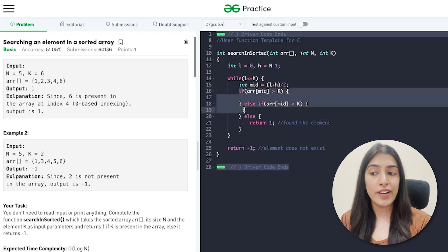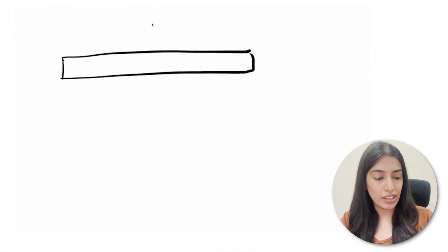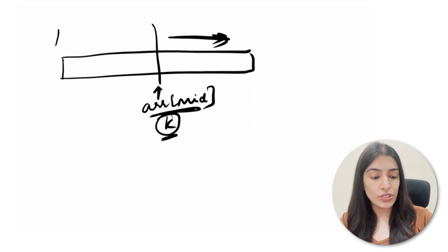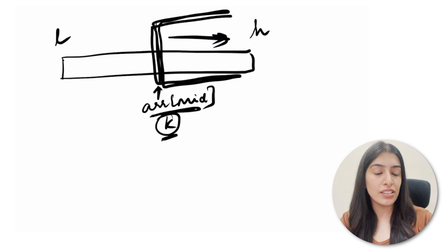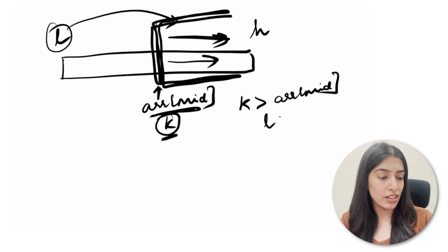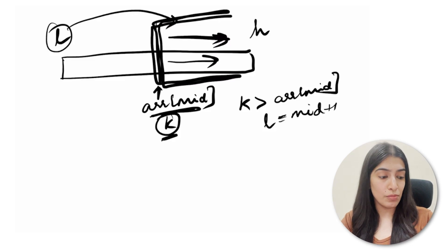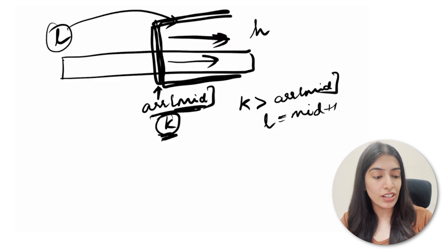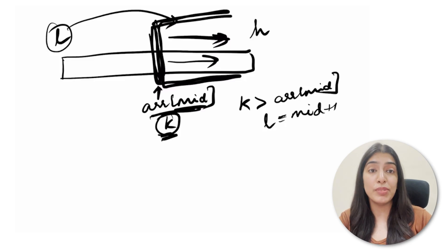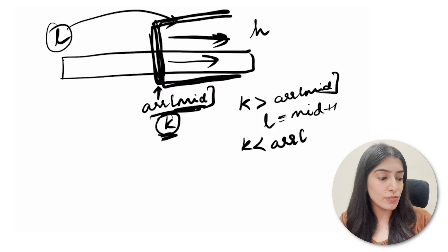Now, how do we divide the array and move forward? If k is bigger than array[mid], we are sure k exists on the right half. So we move our lower pointer to mid plus 1 — we use mid plus 1, not mid, because k is strictly greater than mid, so the middle element itself is ruled out.